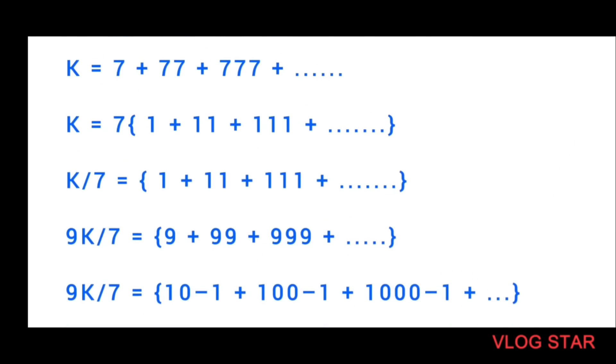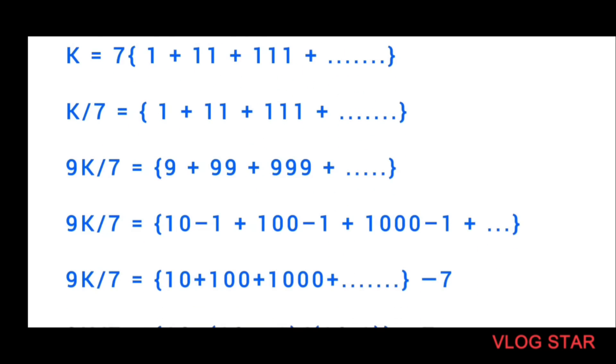This will help me in getting a beautiful small equation: 10 minus 1, 100 minus 1, 1000 minus 1, and so on. Now this is very easy to calculate because there are seven terms.